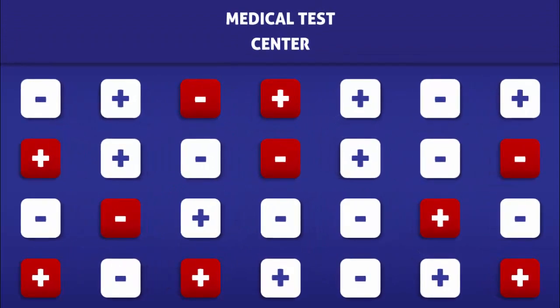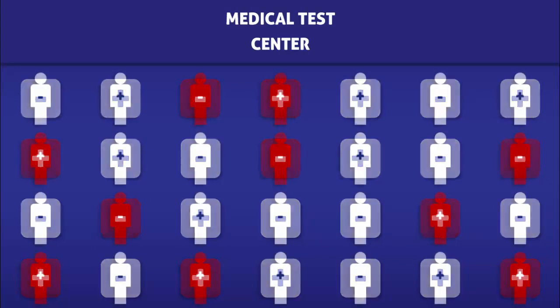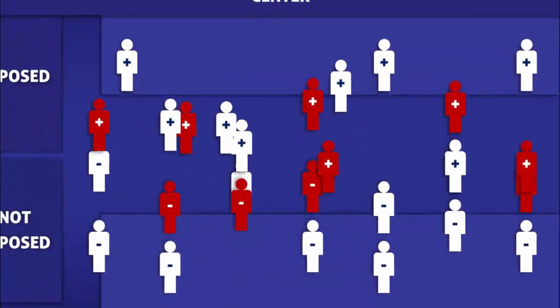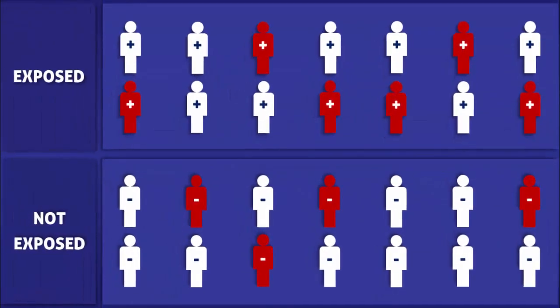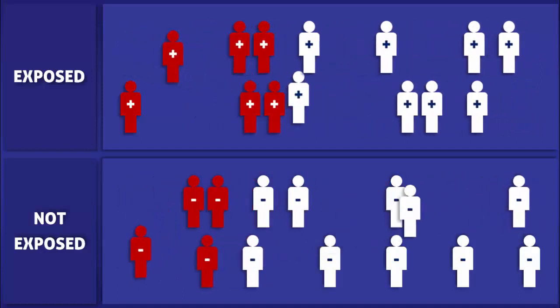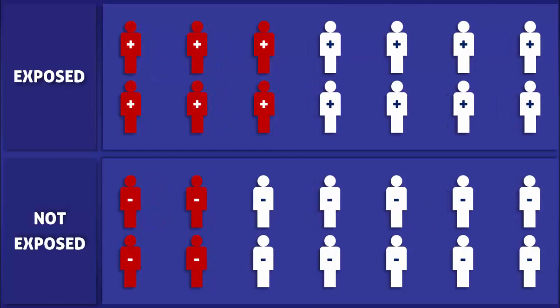In order to help us calculate the number needed to harm, let's imagine that a group of people were exposed to a risk factor. The plus signs represent those who were exposed, while the minus signs represent those who were not. The character icons that are red represent those who developed the condition of interest, while the icons that are white represent those who didn't.